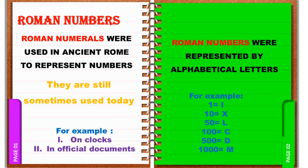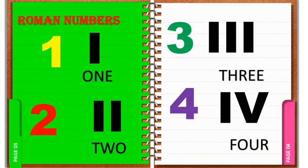For example: 1 represents I, 10 represents X, 50 represents L, 100 represents C, 500 represents D, 1000 represents M.